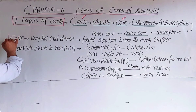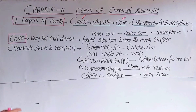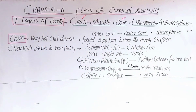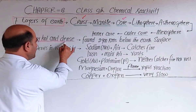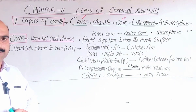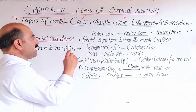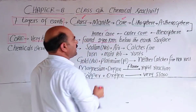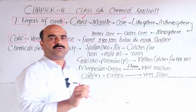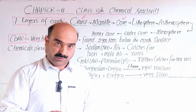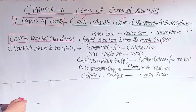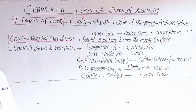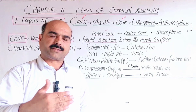The core is the innermost layer of the Earth — it is very deep, very hot and very dense. The high density is due to the presence of heavy metals. The outer core and inner core are distinguished. The core is found 2900 kilometers below the Earth's surface. Heavy metals are present in the core, and the reactions of these metals are exothermic, releasing heat — that is why the core is so hot.